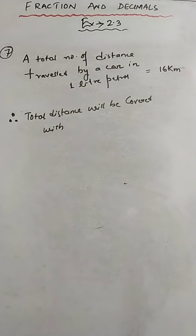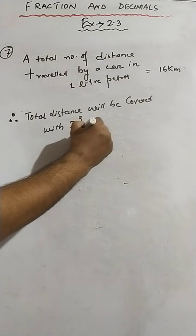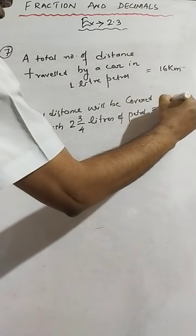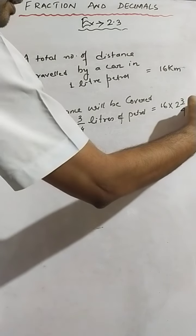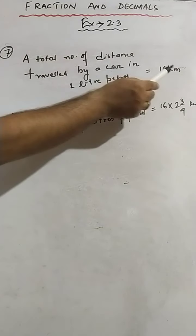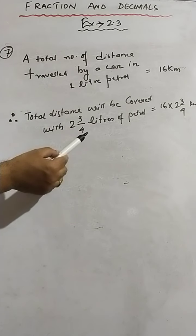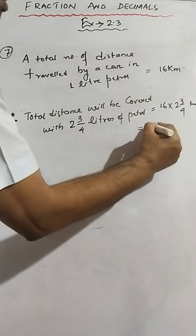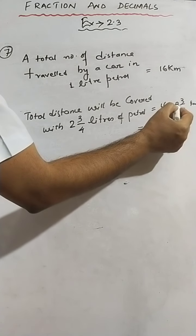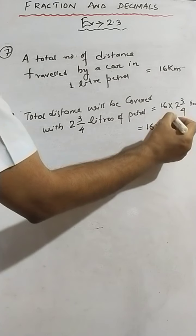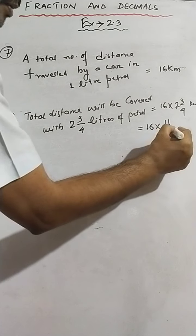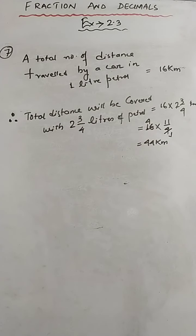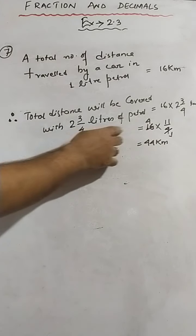Two and three-quarter liters of petrol is given. Total distance equals 16 into two and three-quarters. Convert to improper form: 4 times 2 is 8, plus 3 is 11, so 11 by 4. Reducing: 4 into 16 gives 4, so 4 times 11 equals 44 kilometers. The car covers 44 kilometers.